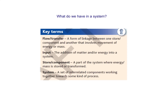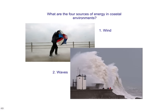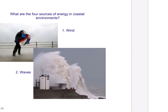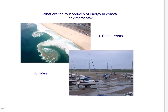You need to see coasts as a system. Within that system we've got flows — links between stores — inputs, the addition of matter into the system, and stores where we keep energy. Those inputs in the coastal environment come in the form of wind and waves, but also sea currents and tides. It's important to say that we could get one or more of these within our coastal system.